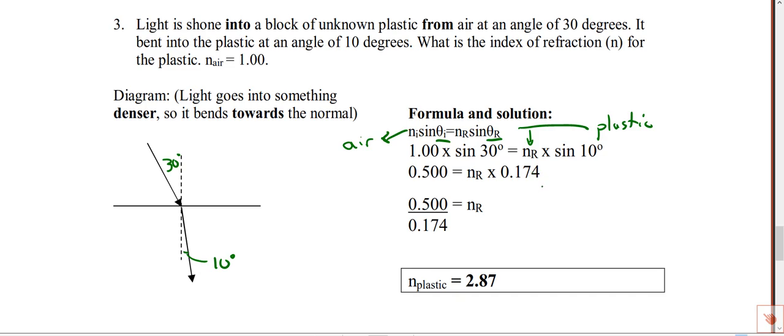Mathematically, this is a bit more what you're used to. We're trying to solve for our index of refraction for our plastic. To do that, we're going to have to divide both sides by 0.174. That's going to result in an index of 2.87. An index above 2 is a very, very good bender of light. It slows it down a lot.